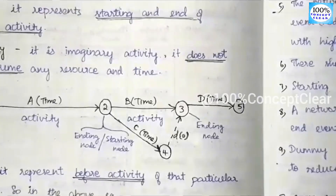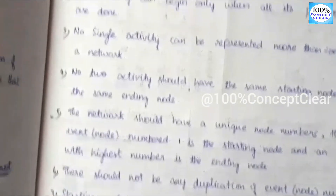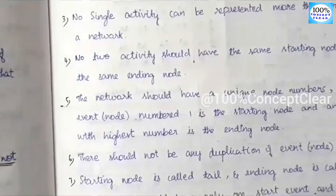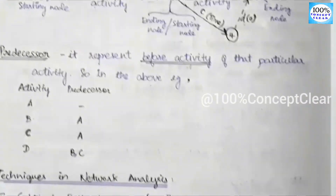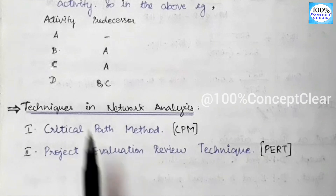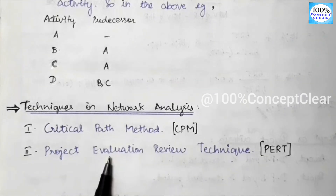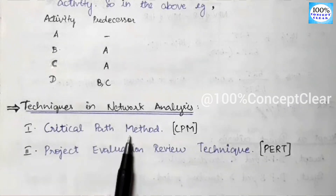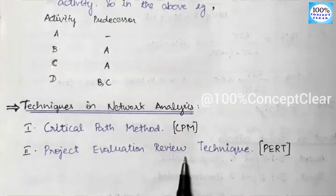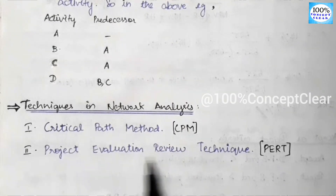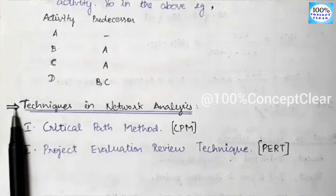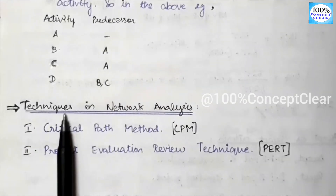These are all the rules of network construction, and we should follow all of them while constructing a network diagram. Next, we look at techniques in network analysis. There are two techniques: the first is Critical Path Method (CPM), and the second is Project Evaluation Review Technique (PERT). In the next video, we will discuss these two techniques in detail.